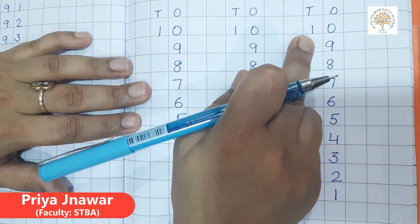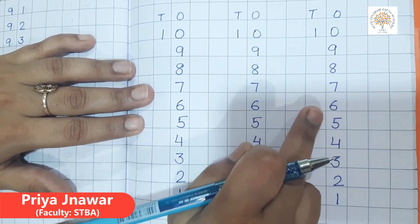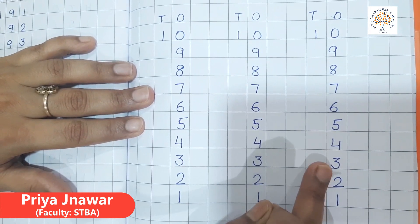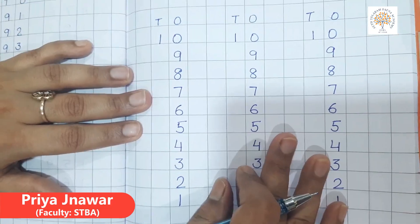Again I am repeating: 10, 9, 8, 7, 6, 5, 4, 3, 2, 1. Is it clear? So students, I hope this back counting of 10 to 1 is clear to you.